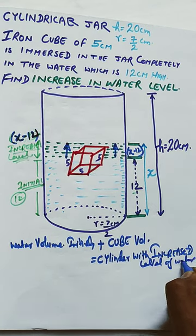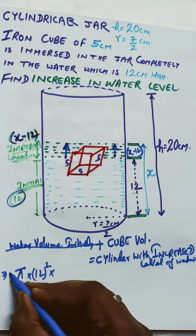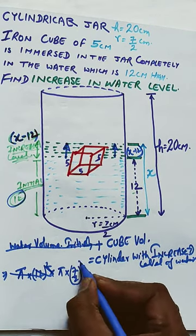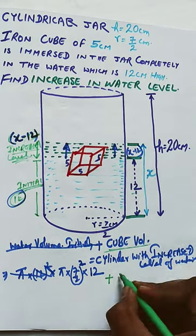The initial water level - we know the volume of the cylinder πr²h. So r is same for both the cylinders initially and finally, and h is 12 initially.